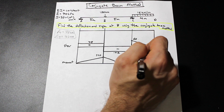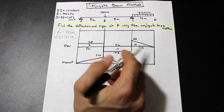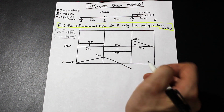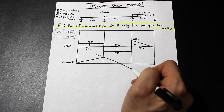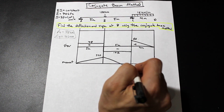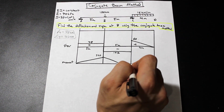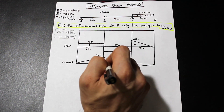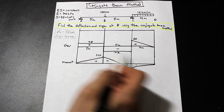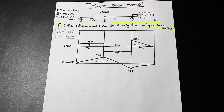We have a linear section here — base times height divided by 2, with a base of 4 meters, 5 meters, and 5 meters. Adding that to 120 brings us to zero. This section here is a parabolic shape, which is going to come into play later.